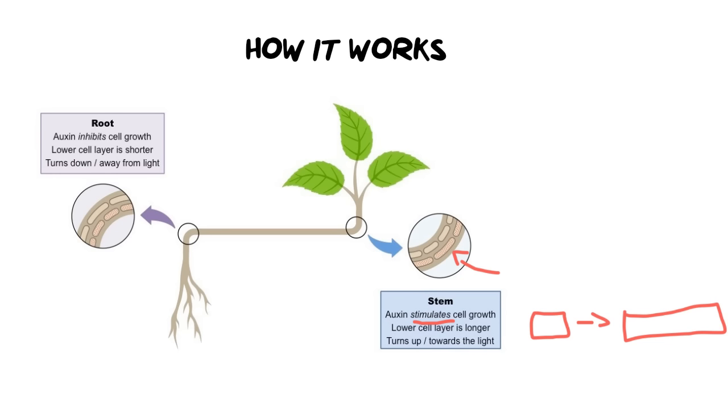So the rule for the stem is the side that the auxins collect on they stimulate growth for the stem, okay, only for the stem. In this instance because this plant is lying down they say that it collects on the lower side which is true because auxins will sink down because of gravity and what it causes then is the plant to turn up towards the light. As we can see here it's making a very sharp turn upwards.